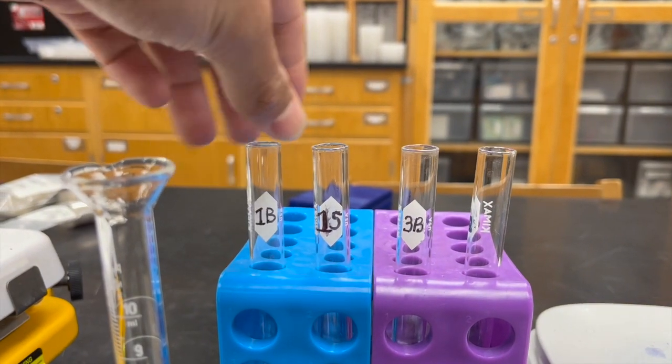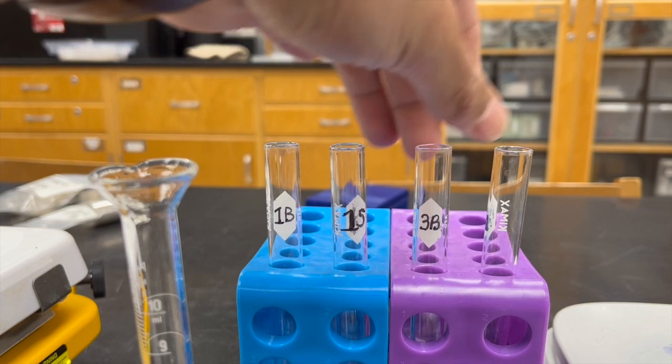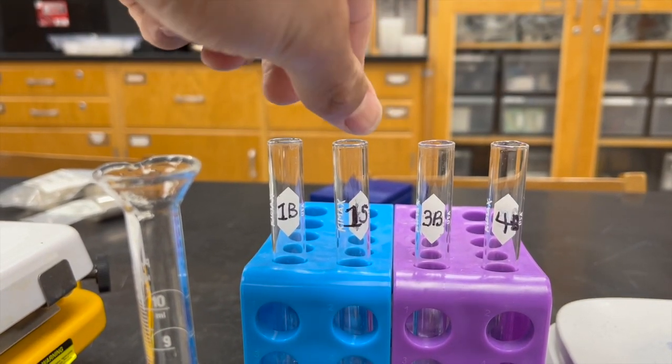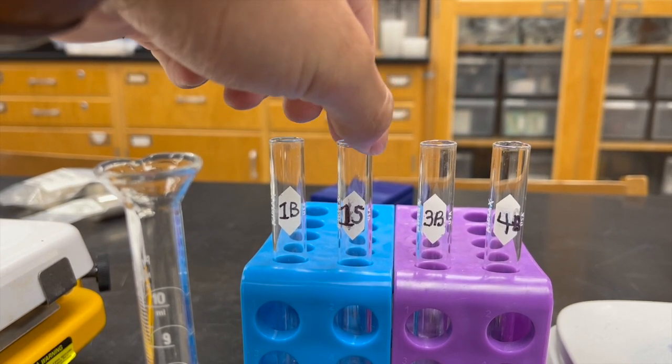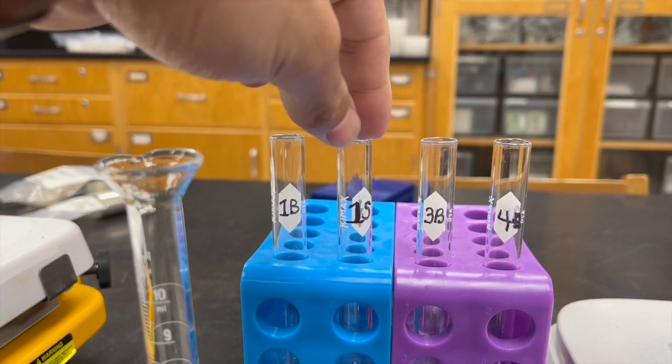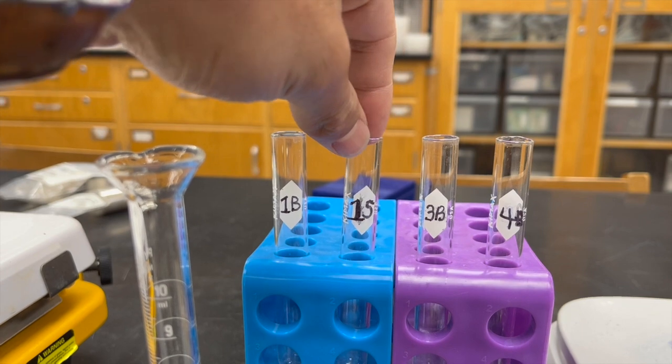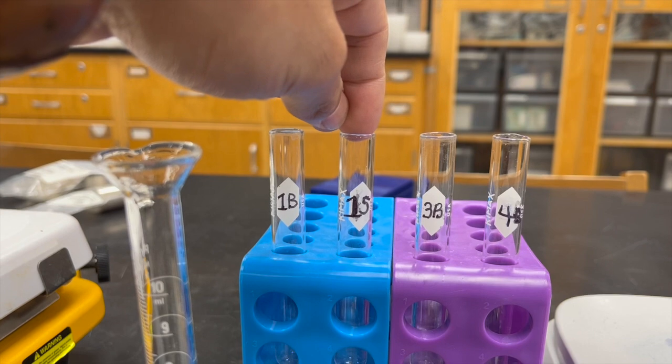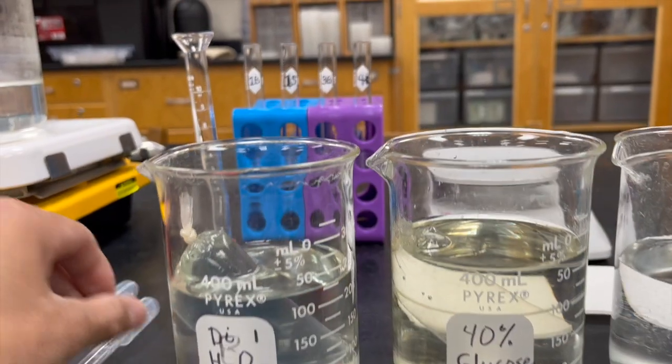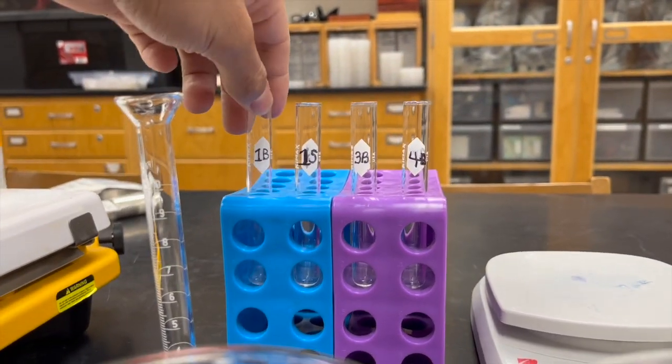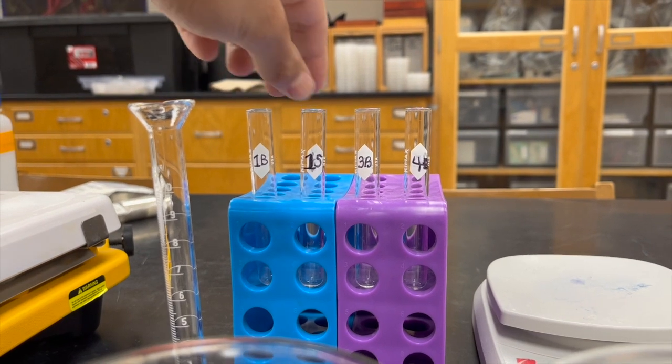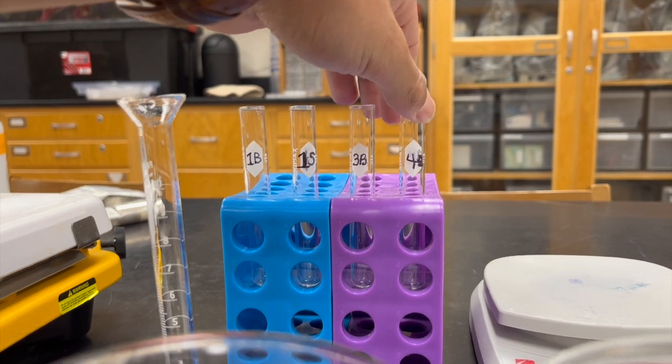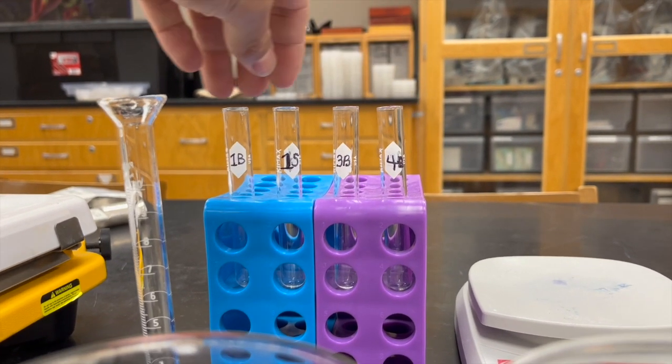So it says 1B, 1S, 3B, and 4B. The B stands for beaker and the S stands for the sack. For 1S, you're going to have to cut the sack and pour some of that into this test tube. For 1B, 1S, as well as 4B, you should pour about 4 drops of the Benedict's solution into each of them.